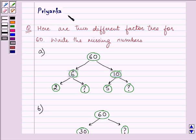Hi and welcome to the session. I am Priyanka and I will be helping you with the following question which says here are two different factor trees for 60. Write the missing numbers.